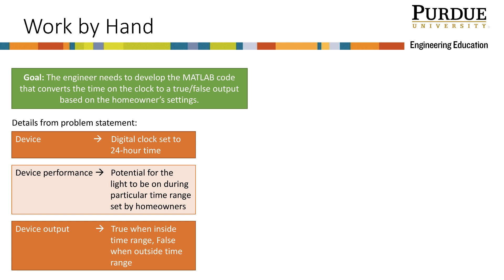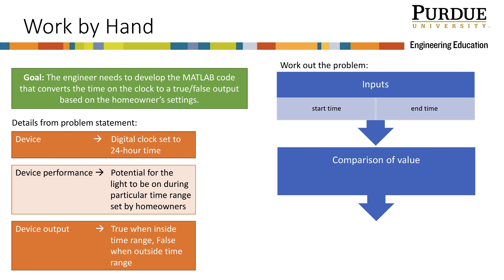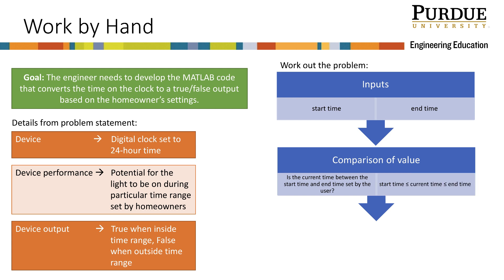The inputs to this problem are the start time and end time of the homeowners' desired time range. We need MATLAB to compare the current clock time to the start and end times. The question we want to answer is: is the current time between the start time and end time set by the user? This translates mathematically to the statement: start time ≤ current time ≤ end time. The output should be 1 if the answer is true and 0 if false.